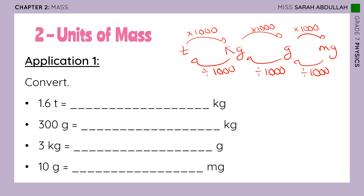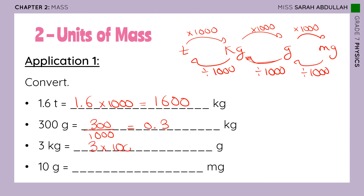Let's solve some conversions. Convert 1.6 tons to kilograms: from ton to kilogram, multiply by 1,000 — so 1.6 × 1,000 = 1,600 kilograms. Convert 300 grams to kilograms: from grams to kilograms, divide by 1,000 — so 300 ÷ 1,000 = 0.3 kilograms. Convert 3 kilograms to grams: multiply by 1,000 — so 3 × 1,000 = 3,000 grams.